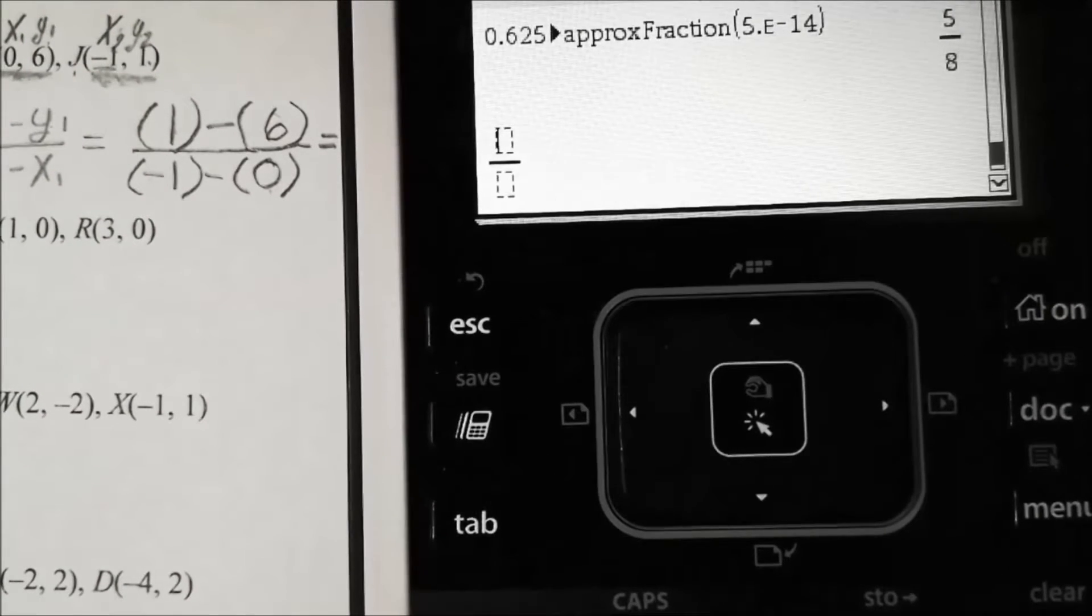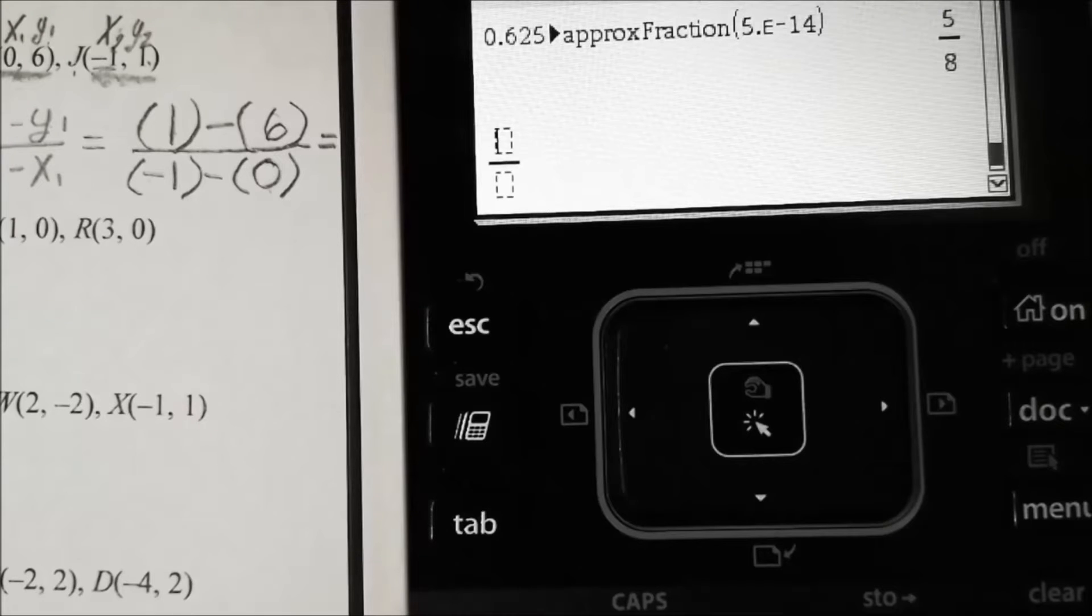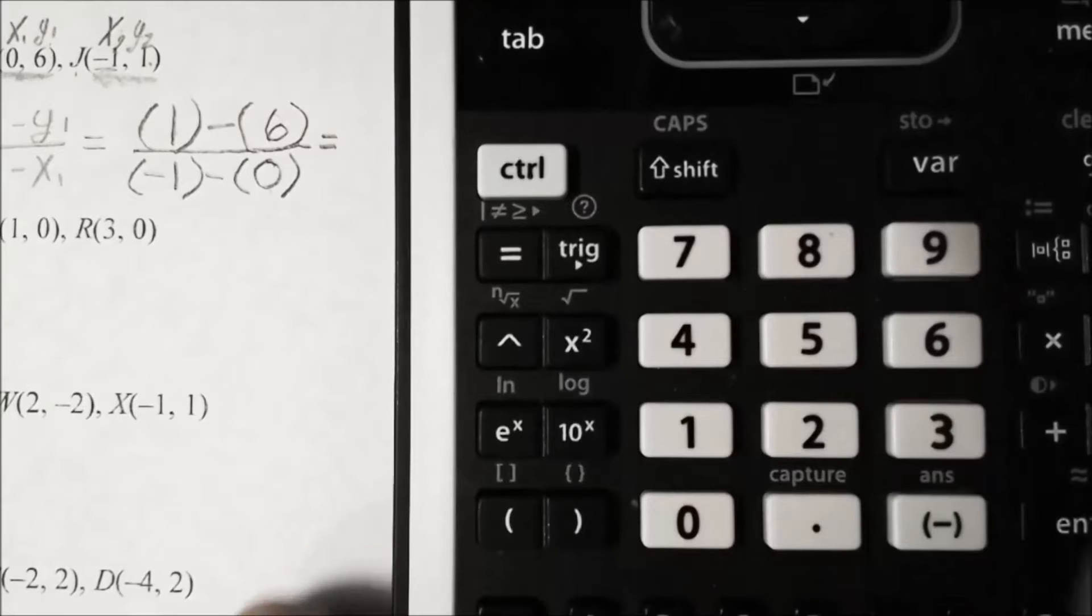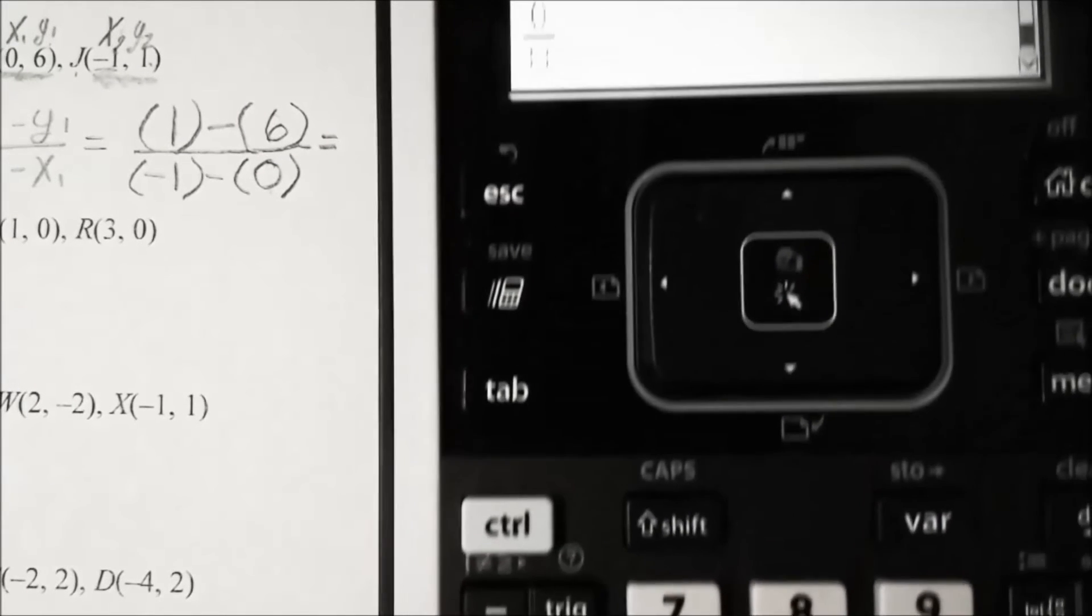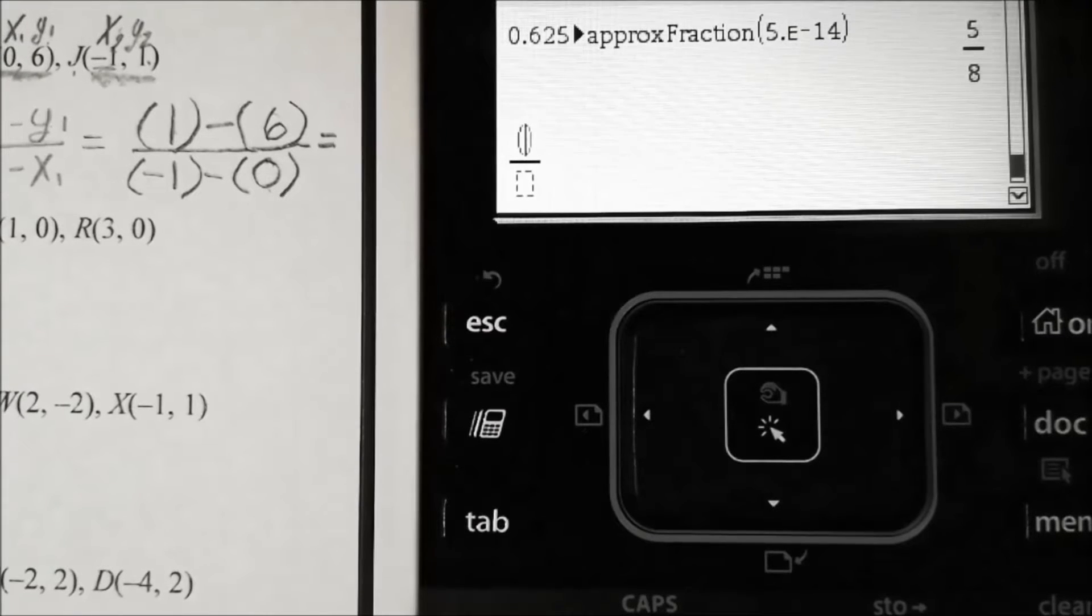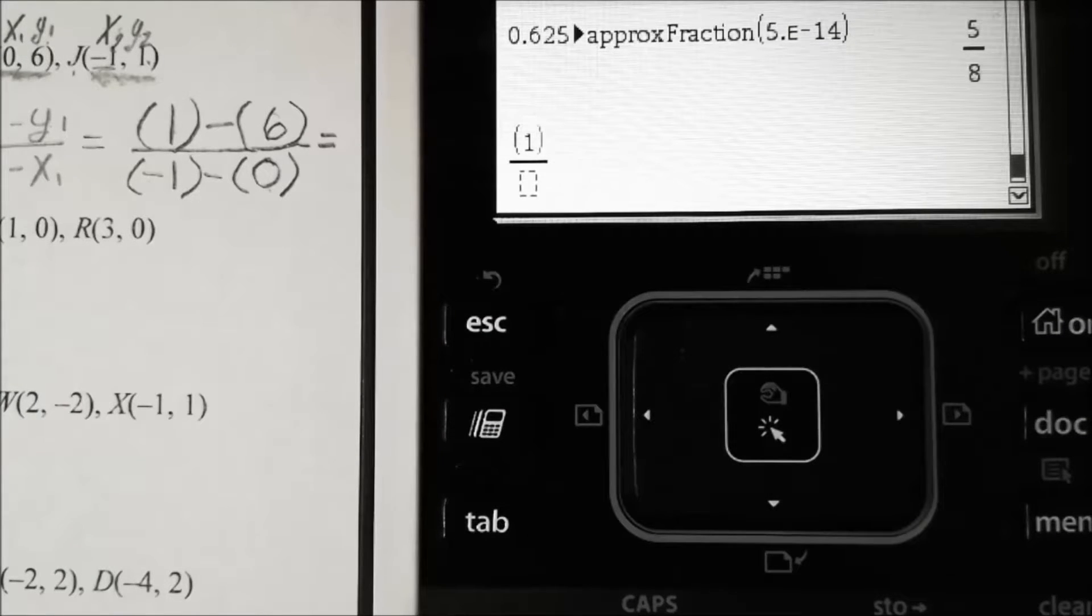I'm going to put parentheses—and by the way, if you forgot where that was, this left hand button is my parentheses key. Once I do that, I'm going to go ahead and put in my positive one, then minus six.